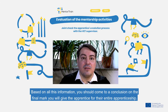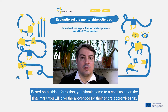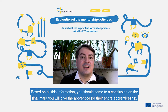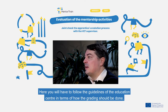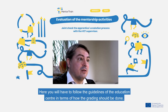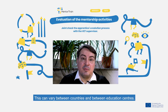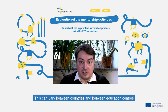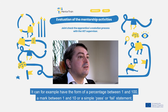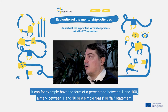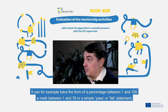Based on all this information, you should come to a conclusion on the final mark you will give the apprentice for the entire apprenticeship. Here you will have to follow the guidelines of the education center in terms of how the grading should be done. This can vary between countries and between education centers — for example, a percentage between 1 and 100, a mark between 1 and 10, or a simple pass or fail statement.